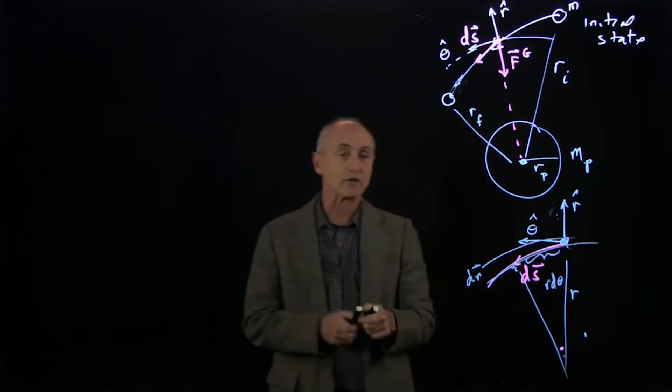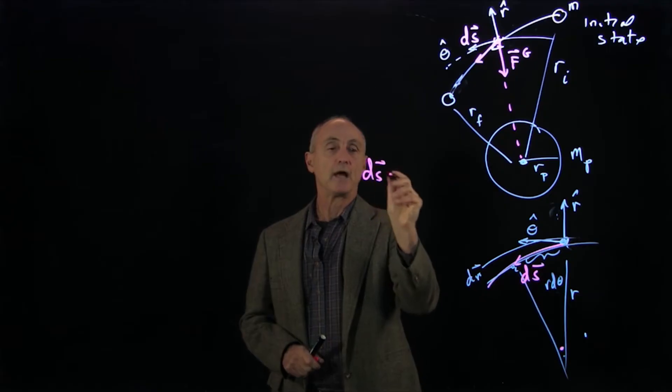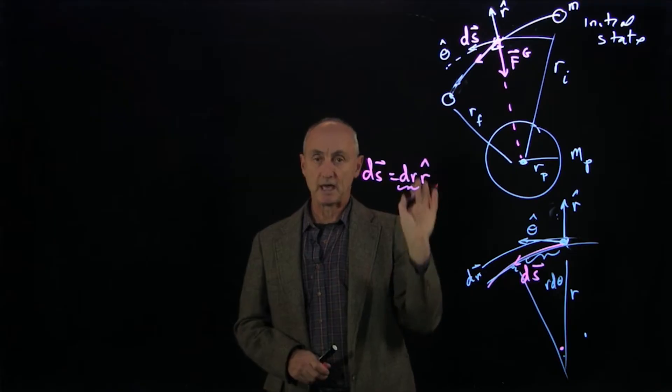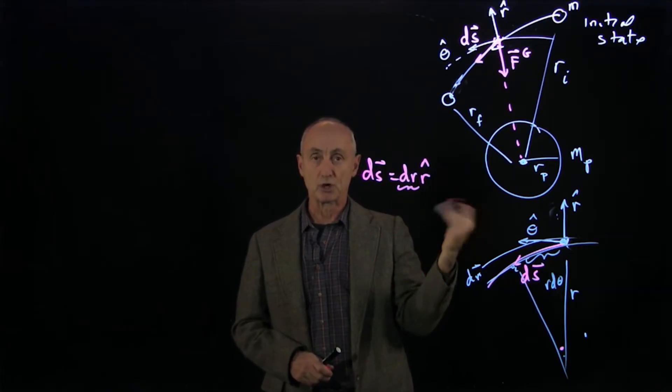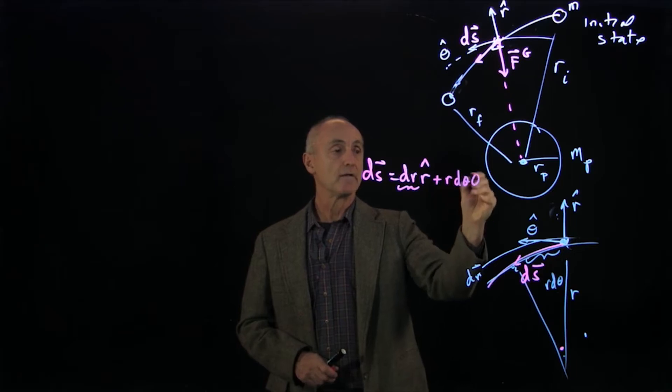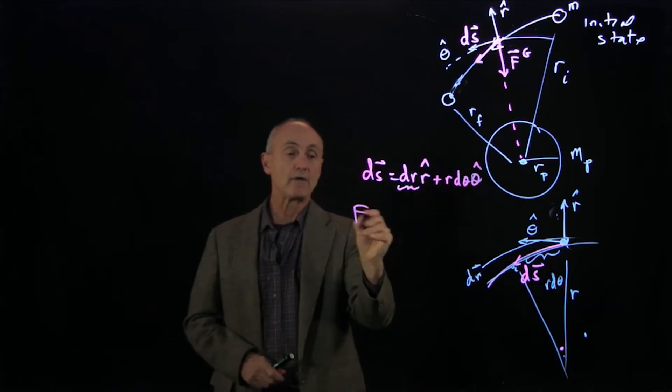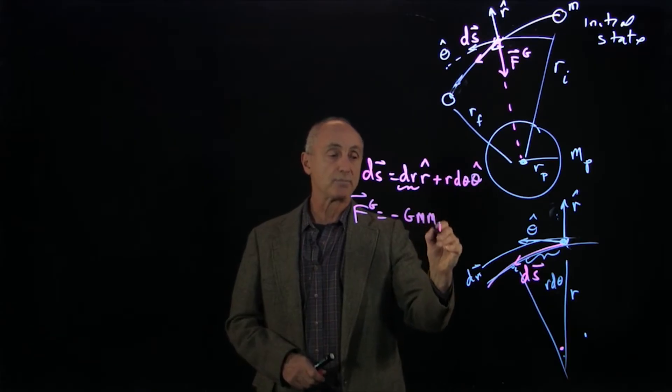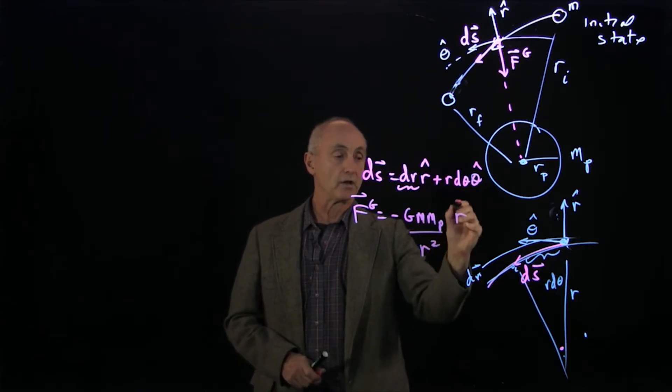So our ds vector, we can write as a radial piece, dr r hat. Now, I don't put a sign in there, because only the end points of my integral will tell me whether I was going towards the planet or away from the planet. And r dθ theta hat. And our gravitational force is minus G mp m over r squared r hat.